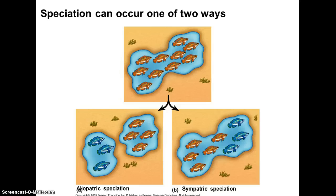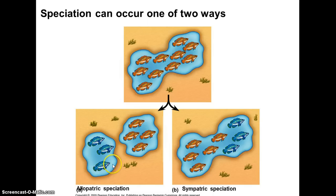How does speciation occur? There are two main ways: allopatric and sympatric. In the allopatric situation, an ancestral population gets broken into two separate populations. At first they would be the same species, but if isolated from each other long enough, they can become two separate species — they would no longer recognize each other as potential mates. The one that's a bit trickier is sympatric speciation, where you never really get isolation, but yet they form two different species.